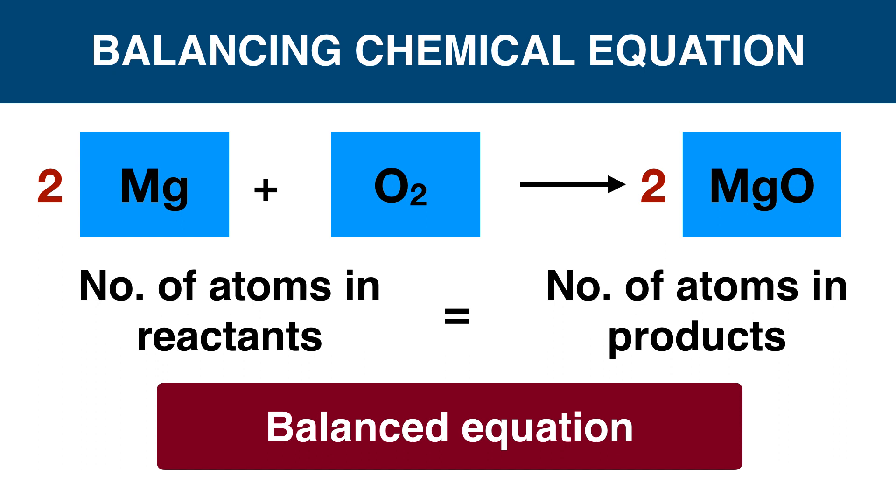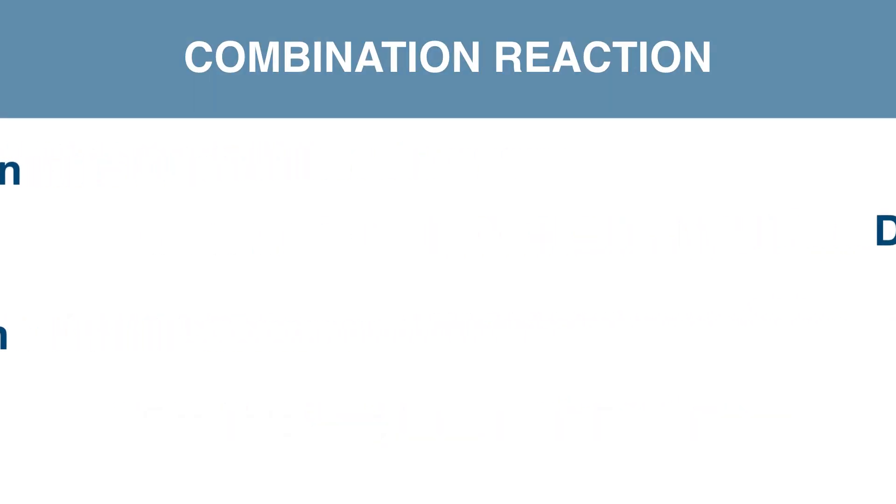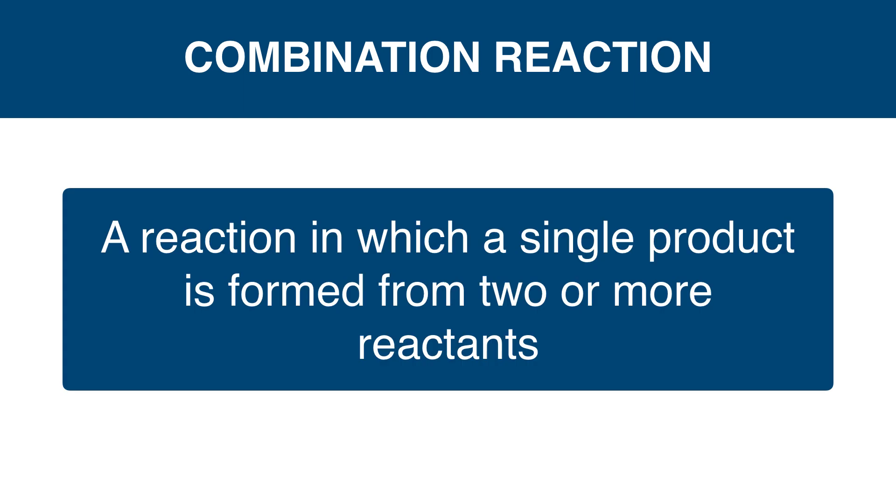For more examples of balancing chemical equations, check the video link given in the description box. As we discussed before, everyday life situations have chemical reactions. For easy learning, these reactions are categorized into four types. The first type is combination reaction: formation of a single product by the combination of two or more reactants.